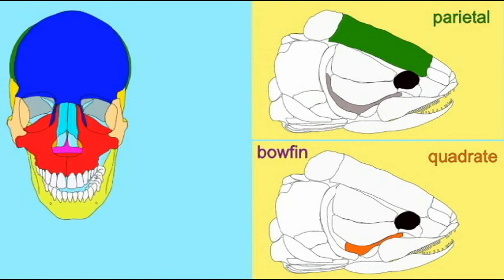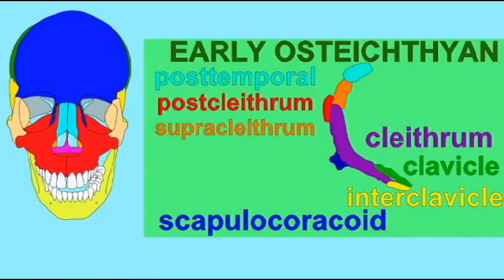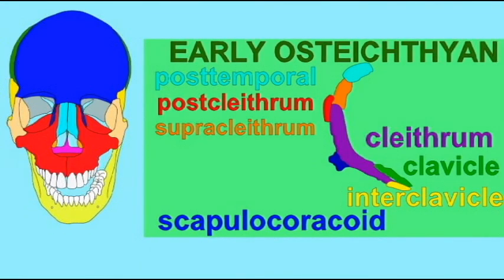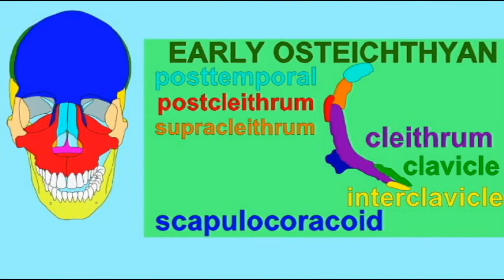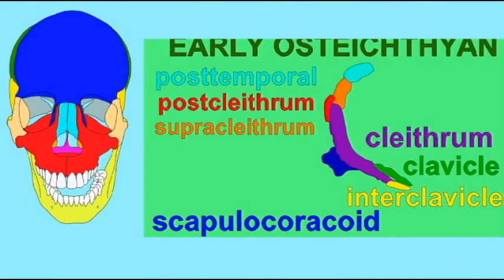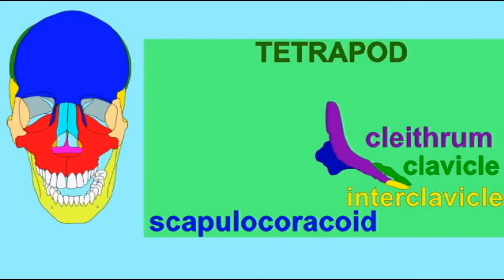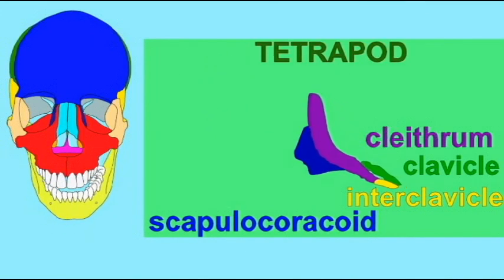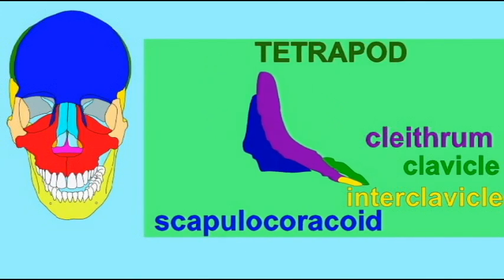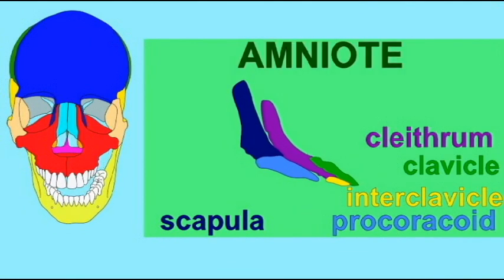The vertebral column evolved bony centra and ribs. The pectoral girdle was composed of bones which the tetrapods would possess in their shoulders: the clithrum, scapulocoracoid, and clavicle. And so, many components of the tetrapod skeleton first evolved in Osteichthian fish.